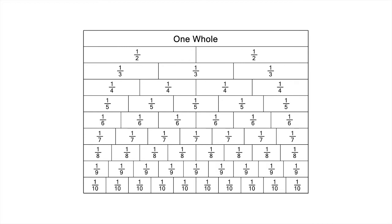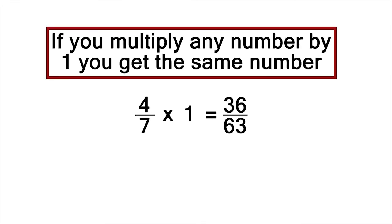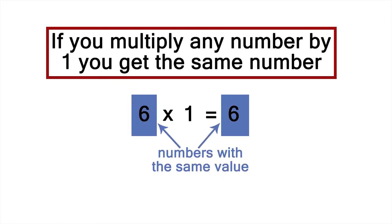Here are two ways of justifying what we've done. From our fraction wall, we know that 9 ninths is the same as one whole, or simply one. So, multiplying 4 sevenths by 9 ninths is really just multiplying 4 sevenths by one. But we know that if you multiply any number by one, you get the same number. For example, 6 times 1 equals 6. We get a number with exactly the same value. By the same reasoning, 4 sevenths has the same value as 36 sixty-thirds.